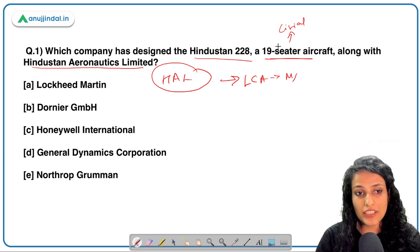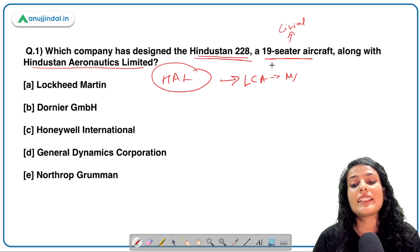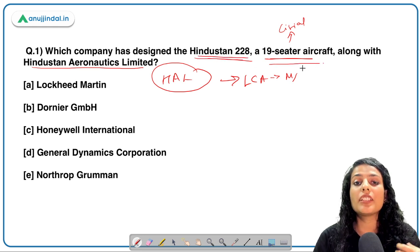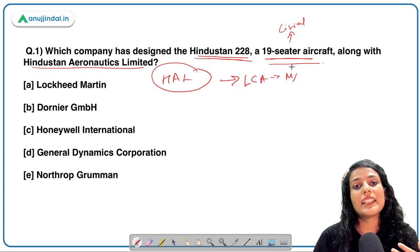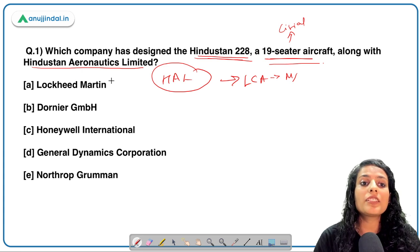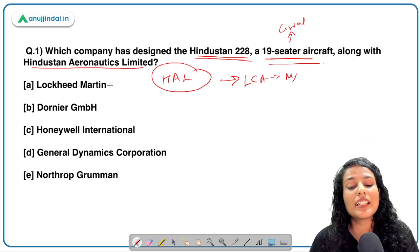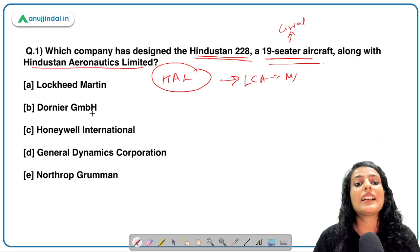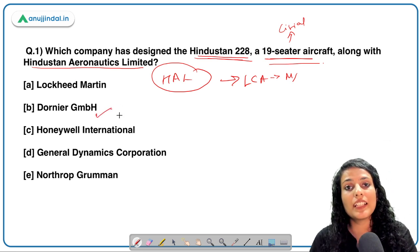Answer the question first: which company has designed the Hindustan 228, a 19-seater aircraft? If you have been following your current affairs regularly, you should know the correct answer, because this is not a new item — it was already launched in the year 2018. The correct answer is Dornier GmbH, which is a German company.